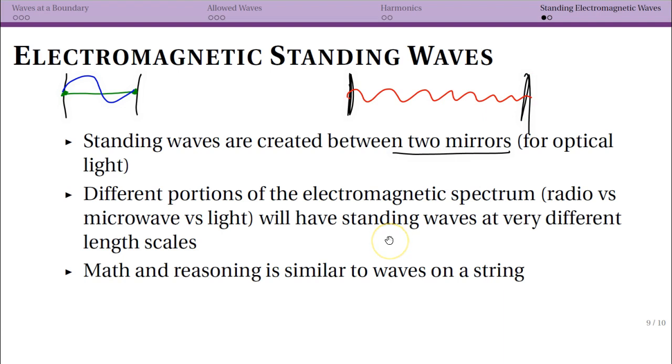So standing waves are something that can happen really for any part of the electromagnetic spectrum. And again radio waves would be one, we'll talk about this with microwaves or light. So mathematically it looks the same, but the scale, the length scale we're interested in is going to be really different.